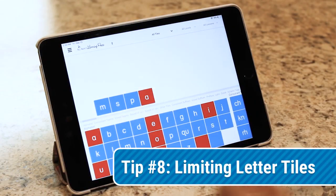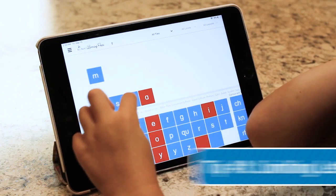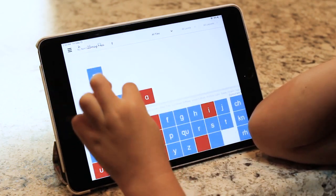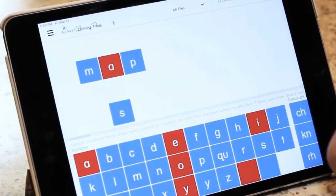If your child is having a hard time spelling a word, you can narrow the options by placing a limited number of tiles in the word building area. Now your child can easily find the letters to spell the word without feeling overwhelmed.